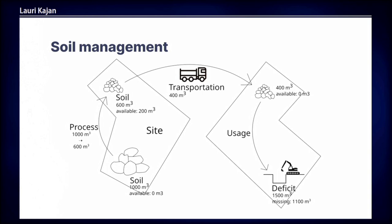The system looks basically like this. We have two construction sites. On the first we have some big rocks. We can process those big rocks, crushing them to smaller rocks, and then transport those small rocks to another construction site where we can use that soil to fill a deficit or hole in the ground.